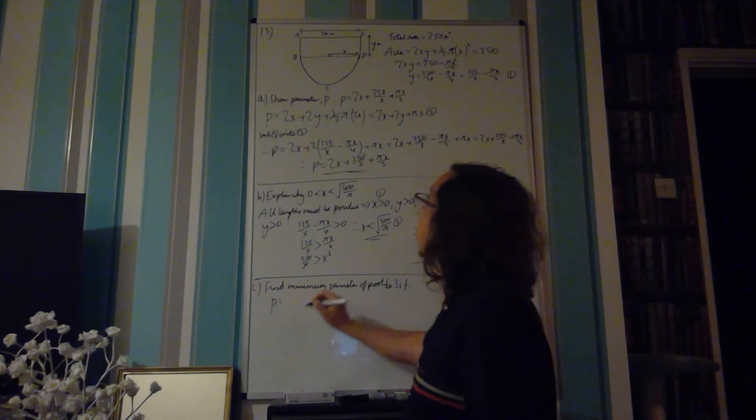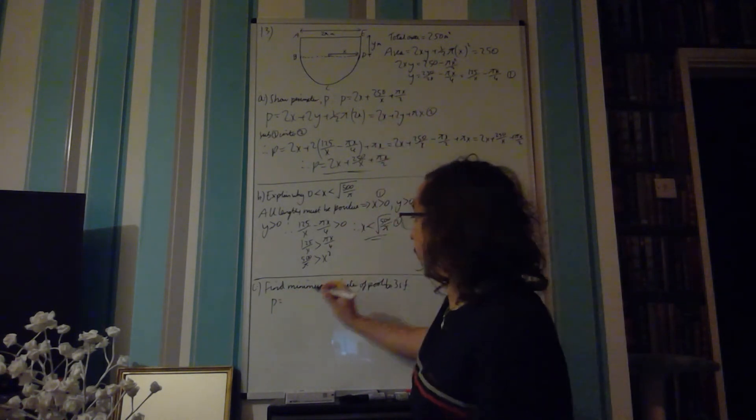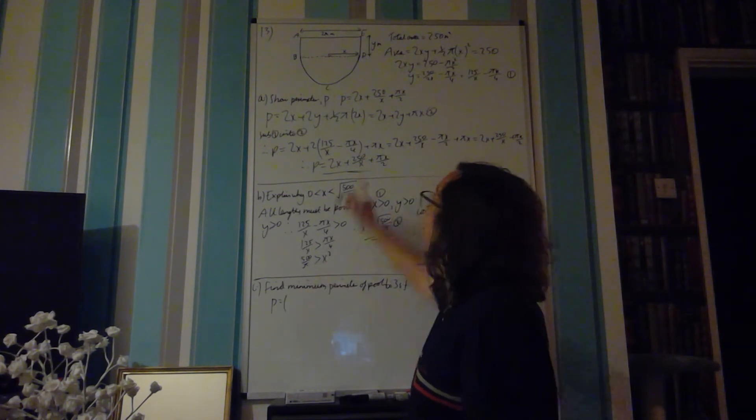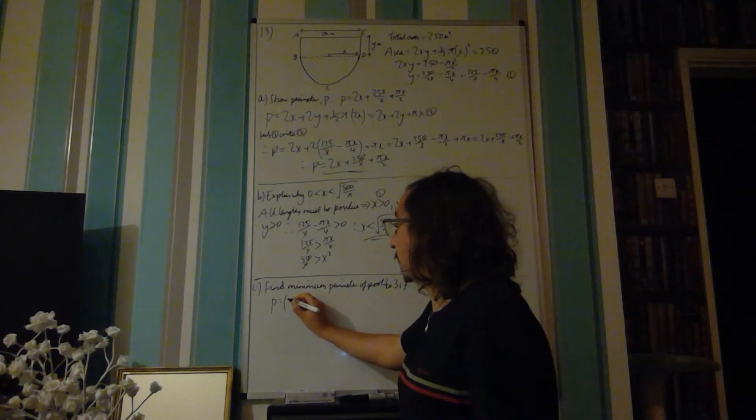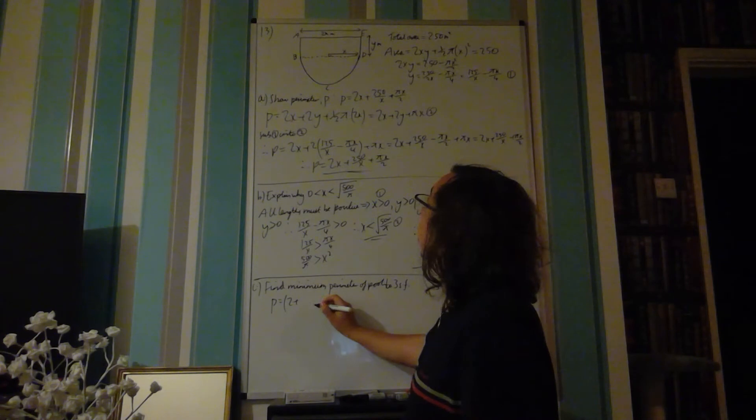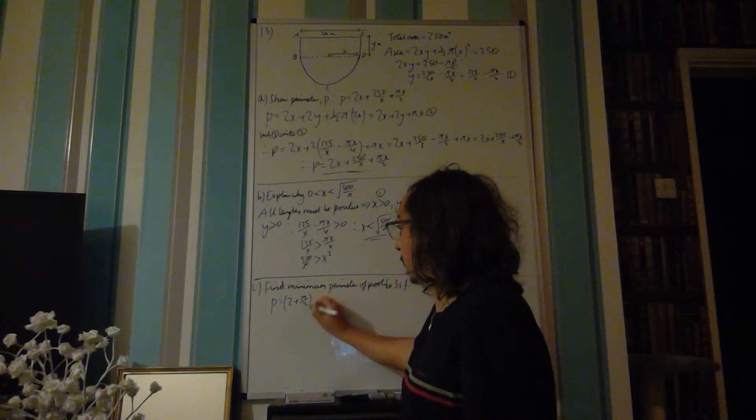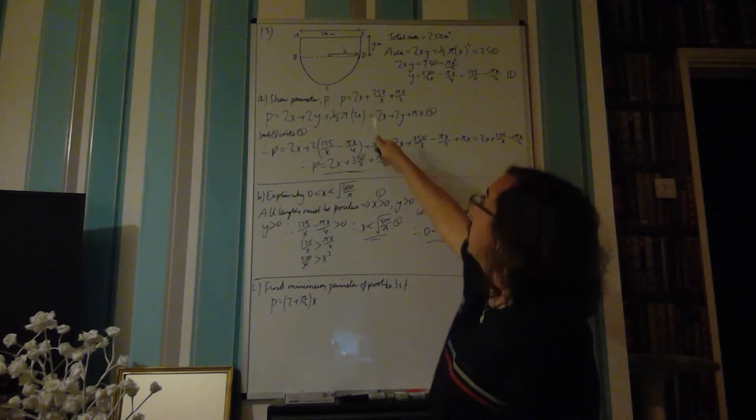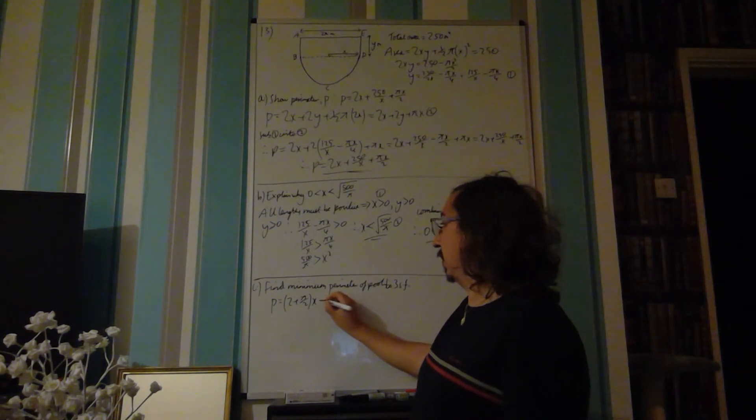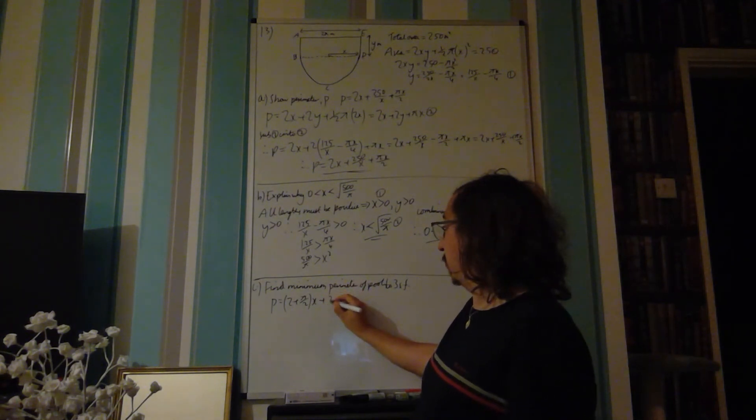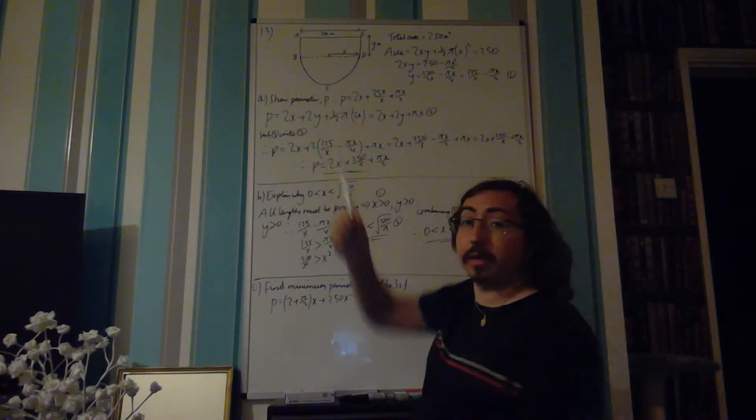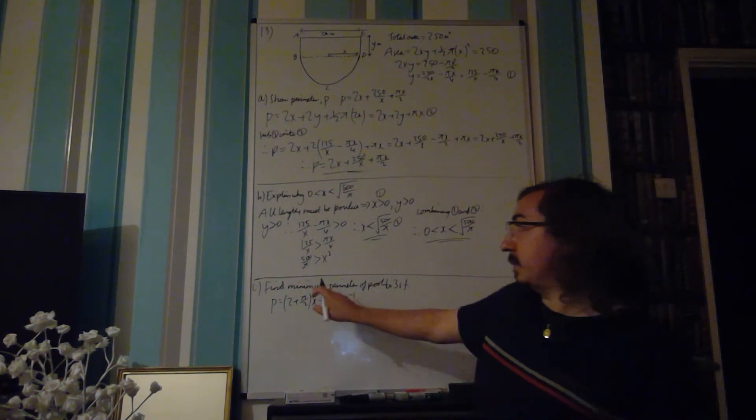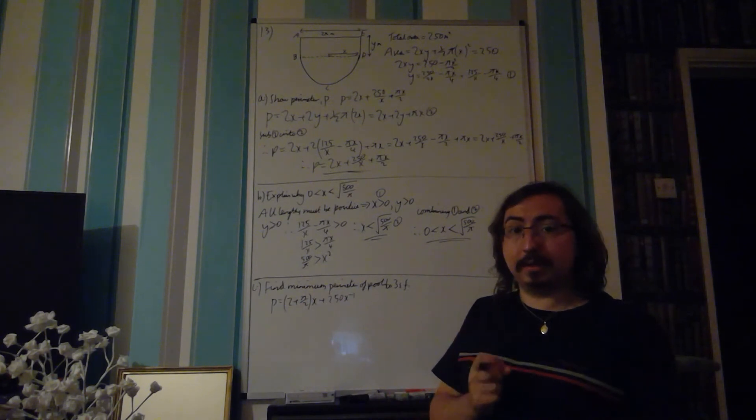P is equal to... Now, I can write it a few different ways, but there is a common factor of x in two of the terms. So I can write 2 plus pi over 2 times x, taking these two terms, plus 250x to the minus 1, rewriting this as a power. Because the minimum is telling me I need to differentiate.